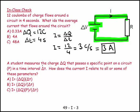And the second part is a student measures the charge delta Q that passes a specific point on a circuit, point P, in a time interval delta T. And then how does the current I relate to all or some of these parameters? So let's make a list of the parameters. We have the amount of charge is delta Q.